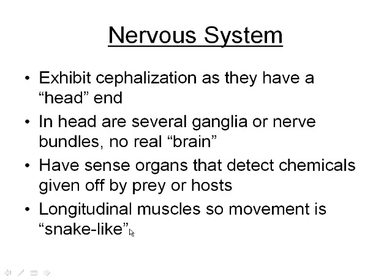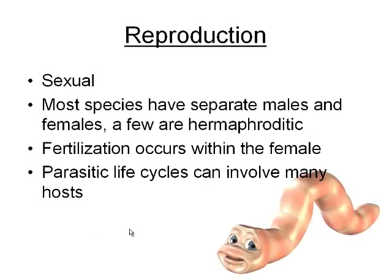Reproduction: sexual reproduction. Most species have separate males and females; however, a few are still hermaphroditic, meaning they have both male and female parts. Fertilization occurs within the female — so no penis fencing in this one. Parasitic life cycles can involve many hosts, similar to that of the Platyhelminthes.